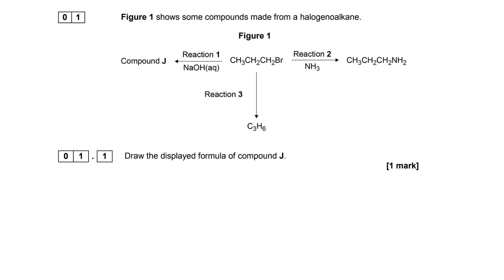We can see here we're starting off being asked to draw the displayed formula of compound J. We need to work out what's actually happening. We're starting with a haloalkane and we're adding NaOH, and from the NaOH the important part is the OH minus. The actual reaction we're looking at here is nucleophilic substitution, converting a haloalkane into an alcohol.